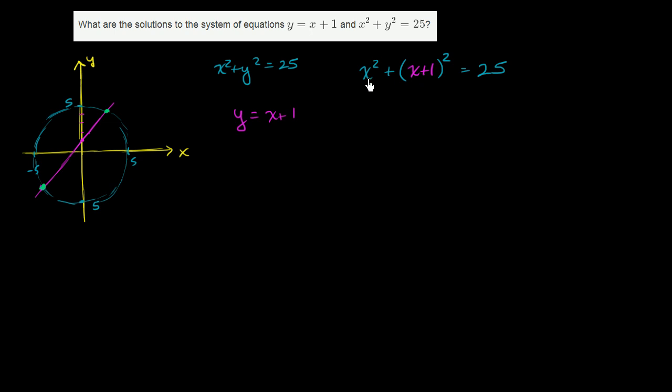And now we can attempt to solve for x. So we get x squared plus, now we square this, we'll get x squared plus 2x plus 1. And that must be equal to 25. We have 2x squared, now I'm just combining these two terms, 2x squared plus 2x plus 1 is equal to 25.